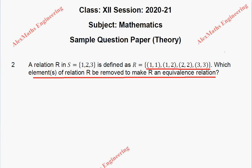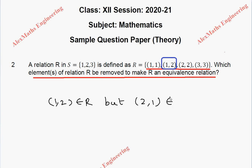We can see an element (1,2), but its reverse is not available. That is, (1,2) belongs to R but its reverse (2,1) does not belong to R. So it is not symmetric.